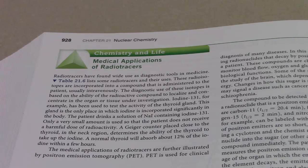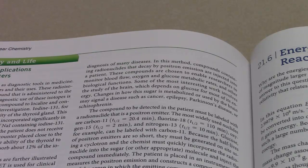The medical applications of radiotracers are further illustrated by positron emission tomography, or PET. PET is used for clinical diagnosis of many diseases. In this method, compounds containing radionuclides that decay by positron emission are injected into a patient. These compounds are chosen to enable researchers to monitor blood flow, oxygen and glucose metabolic rates, and other biological functions.